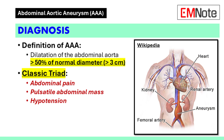Diagnosis. The clinical presentation suggests a ruptured abdominal aortic aneurysm. An abdominal aortic aneurysm is defined as a dilatation of the abdominal aorta exceeding 50% of its normal diameter, which is typically greater than 3 centimeters for the infrarenal aorta. Key diagnostic features include abdominal pain, a pulsatile abdominal mass, and hypotension.